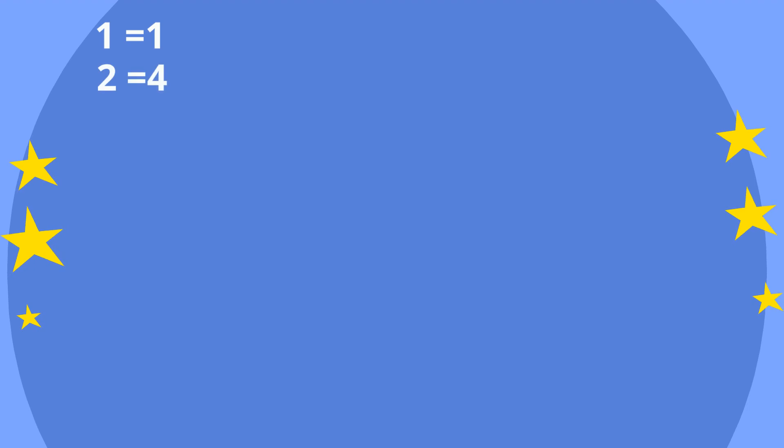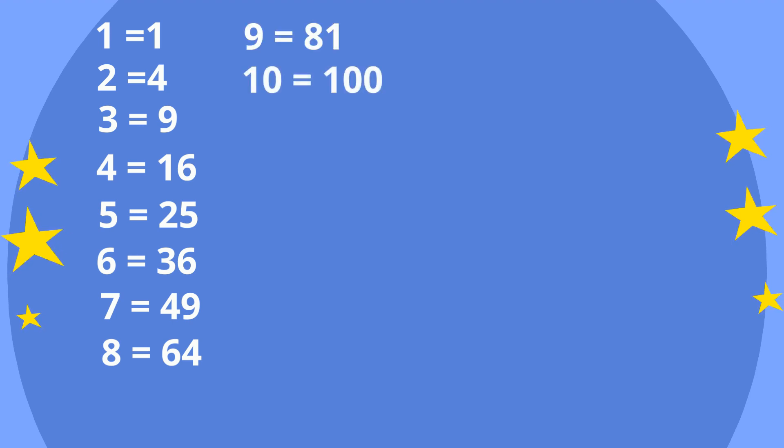1 is 1, 2 is 4, 3 is 9, 4 is 16, 5 is 25, 6 is 36, 7 is 49, 8 is 64, 9 is 81, 10 is 100, 11 is 121, 12 is 144.